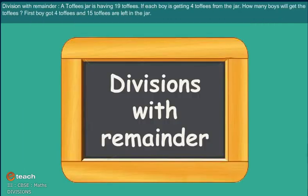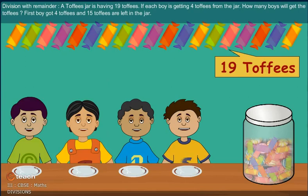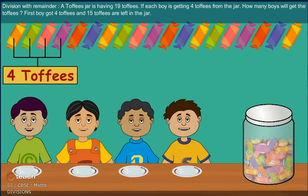Division with remainder. A toffee jar has 19 toffees. If each boy is getting 4 toffees from the jar, how many boys will get the toffees?